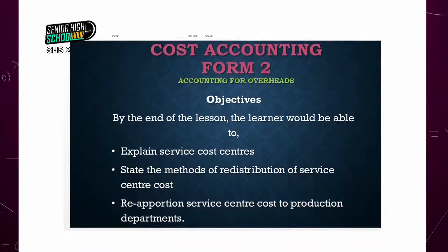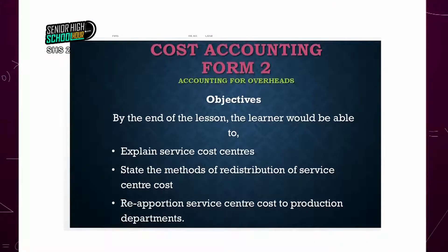Last week, we looked at overheads. And today, we are going to continue from where we ended. So, a quick recap before I continue. Last week, we talked about overheads and we mentioned that overheads is the aggregate of all indirect costs — that is, indirect material, indirect labor, and indirect expenses.